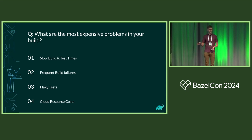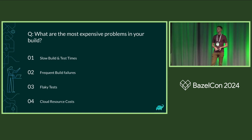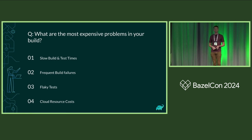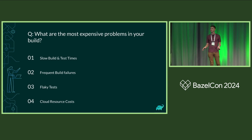A quick show of hands: who has slow build and test times as their most expensive problem? Frequent build failures — those that just keep coming back over and over? Flaky tests? Expensive cloud compute resource costs? None of the above — my builds are cheap?